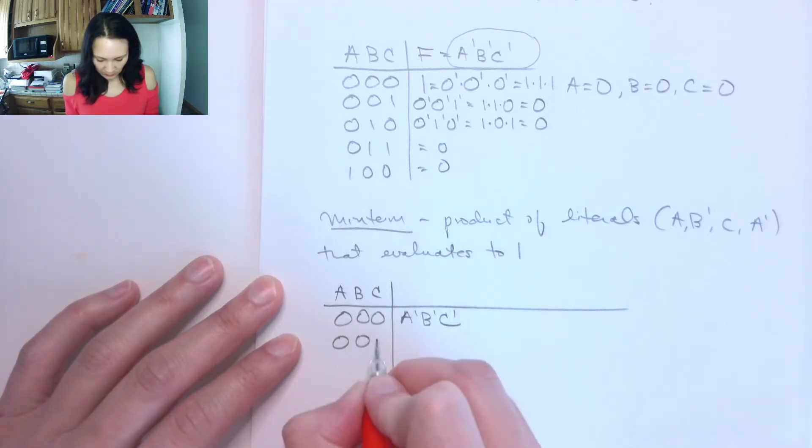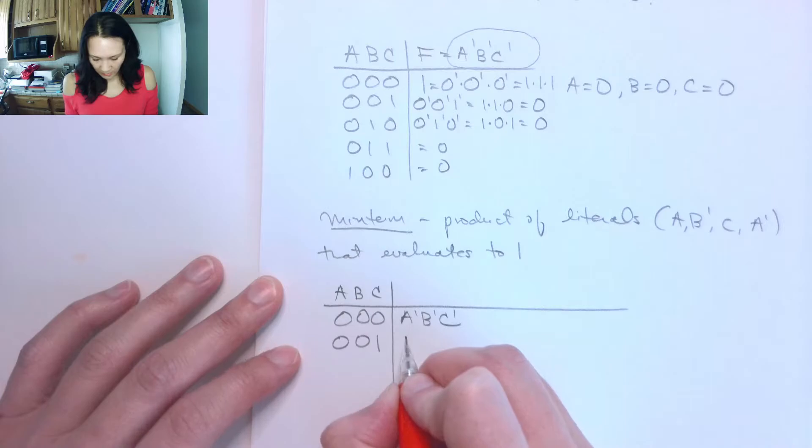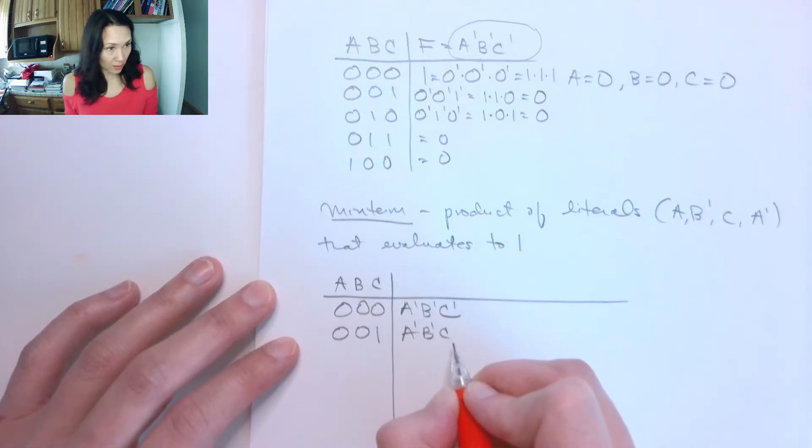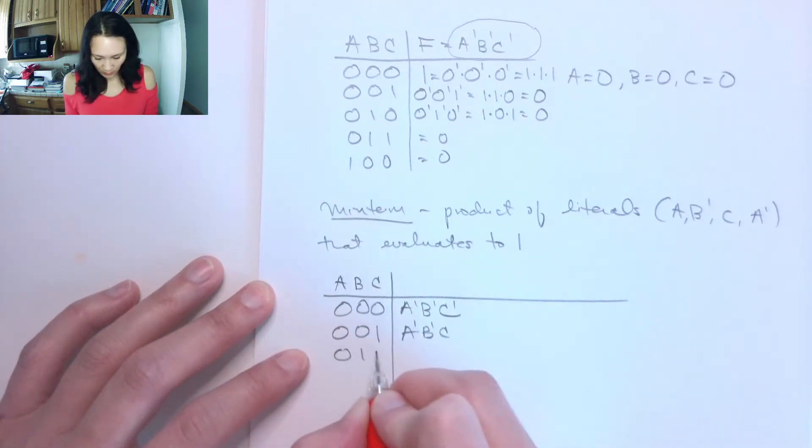If our inputs are 0, 0, 1, then our minterm would be not, not, and this one's not complemented. If we have input 0, 1, 0, we would have A naught, B, C naught.